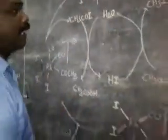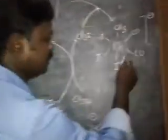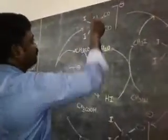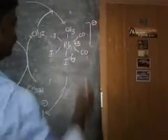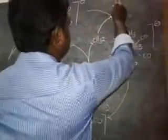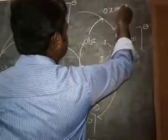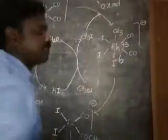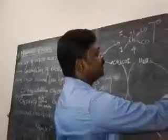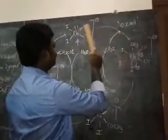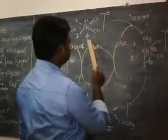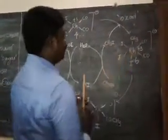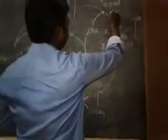Here you can see the coordination number of the rhodium complex changes from four to six, and the oxidation state of rhodium changes from +1 to +3. This is called an oxidative addition reaction — oxidative means an increase in oxidation number (from +1 to +3), and addition means an increase in coordination number (from 4 to 6). This is the first step of the reaction.